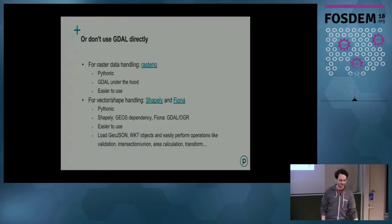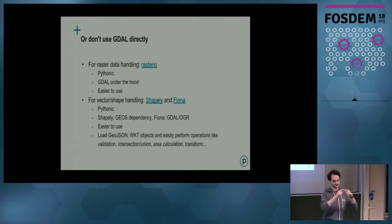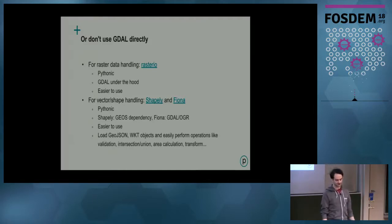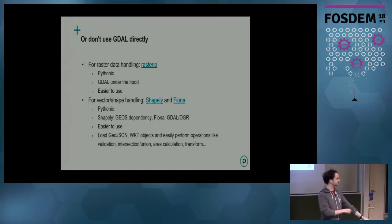If you're just trying to do some small things, you don't actually have to use the GDAL Python bindings directly. There are a few good libraries we use as well. Rasterio, from Mapbox, is basically a Pythonic version of GDAL — it's all GDAL under the hood, but with a Pythonic API that's a lot easier to use. For vectors and shapes, there's Shapely and Fiona from the same person. Shapely only has a GEOS dependency, and Fiona has the full GDAL OGR dependency. They're also a lot easier to use — you can load GeoJSONs, WKTs, do validation, intersection, area calculation, and other transformations.